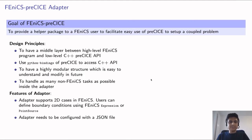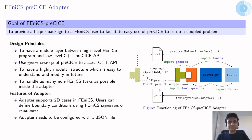Some features of the adapter: it supports two-dimensional cases in FEniCS. Users can define boundary conditions using the FEniCS Expression class or the FEniCS PointSource class. In cases of PointSource, multiple point sources can be defined. The adapter additionally needs a JSON file for its configuration, which needs to be provided by the user. The figure on the right briefly explains the working of the adapter and its connection to preCICE and the FEniCS program. The user will mainly concentrate on the solver.py file, which imports functionality from FEniCS and is the main working file where the user solves the problem. The orange block, which is the FEniCS preCICE adapter, is the main connection line between preCICE and the solver.py file.